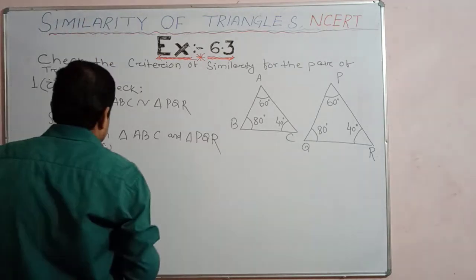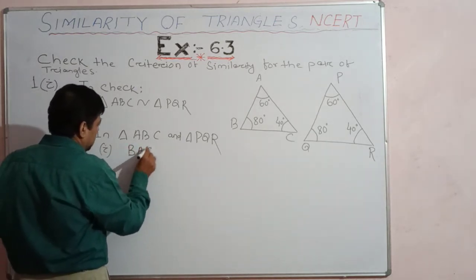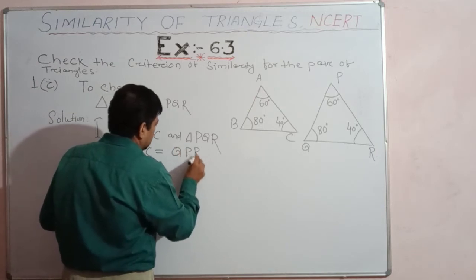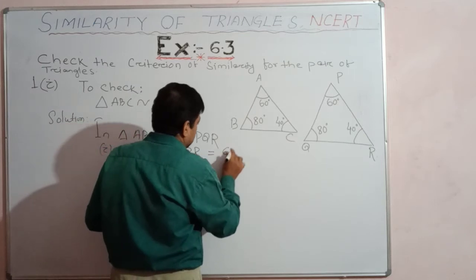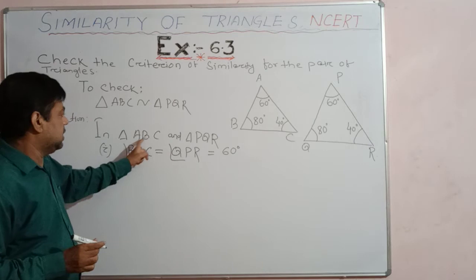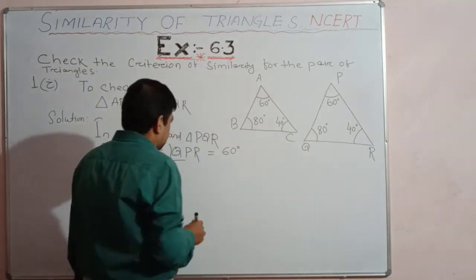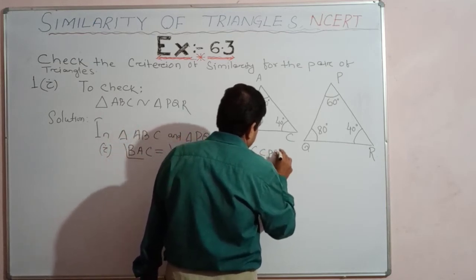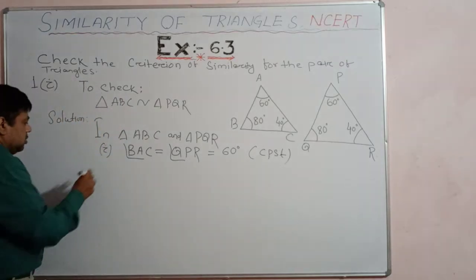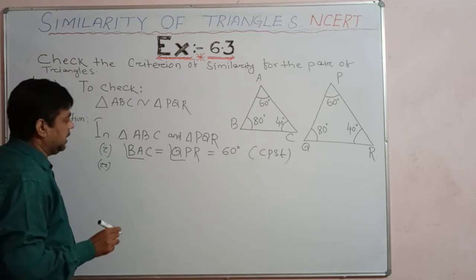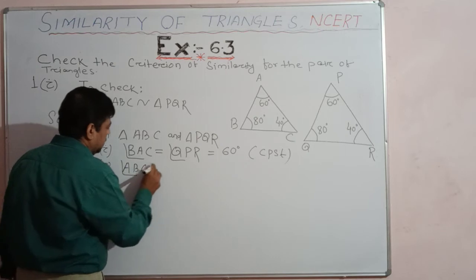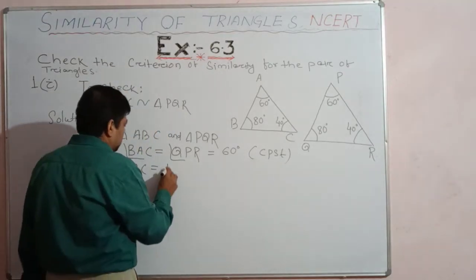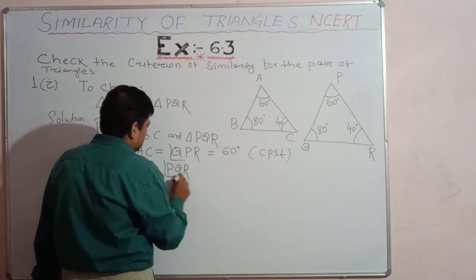Looking at the triangles, angle BAC is equal to angle QPR — both are 60 degrees. This is the corresponding part of similar triangles, called CPST. The second point: angle ABC is 80 degrees, and similarly angle PQR is also 80 degrees. Both corresponding angles are equal.